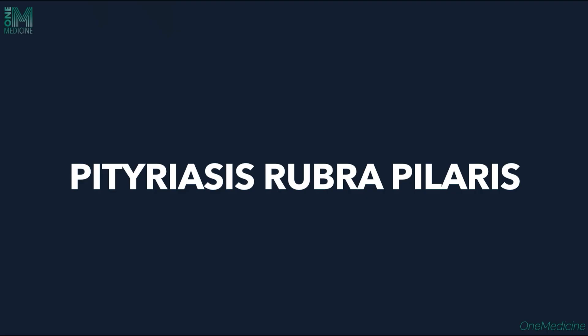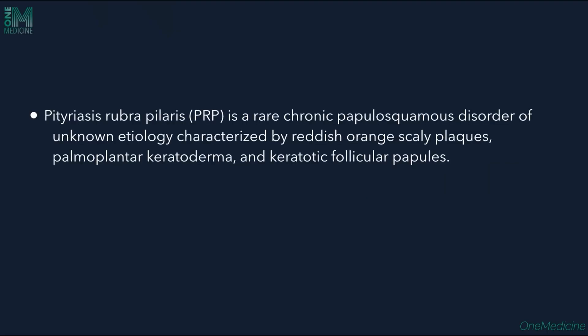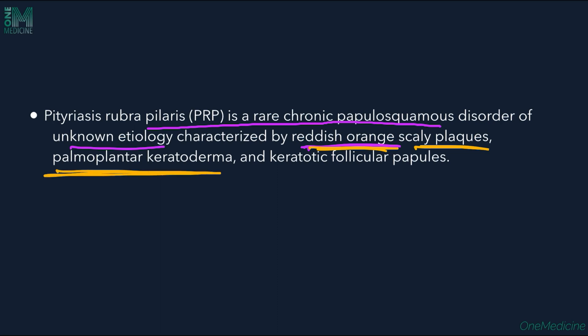Pityriasis rubra pilaris (PRP) is a rare chronic papulosquamous disorder, meaning there will be scales formed, of unknown etiology. It is characterized by reddish-orange colored scaly plaques associated with palmoplantar keratoderma, meaning thickening of the palms and soles, as well as keratotic follicular papules which are localized to the follicular areas.